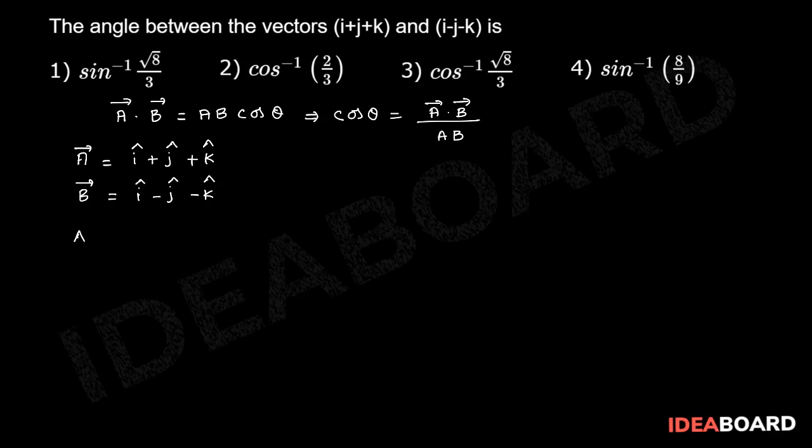First of all take a bar dot b bar. a bar dot b bar is 1 minus 1 minus 1 that equal to minus 1.